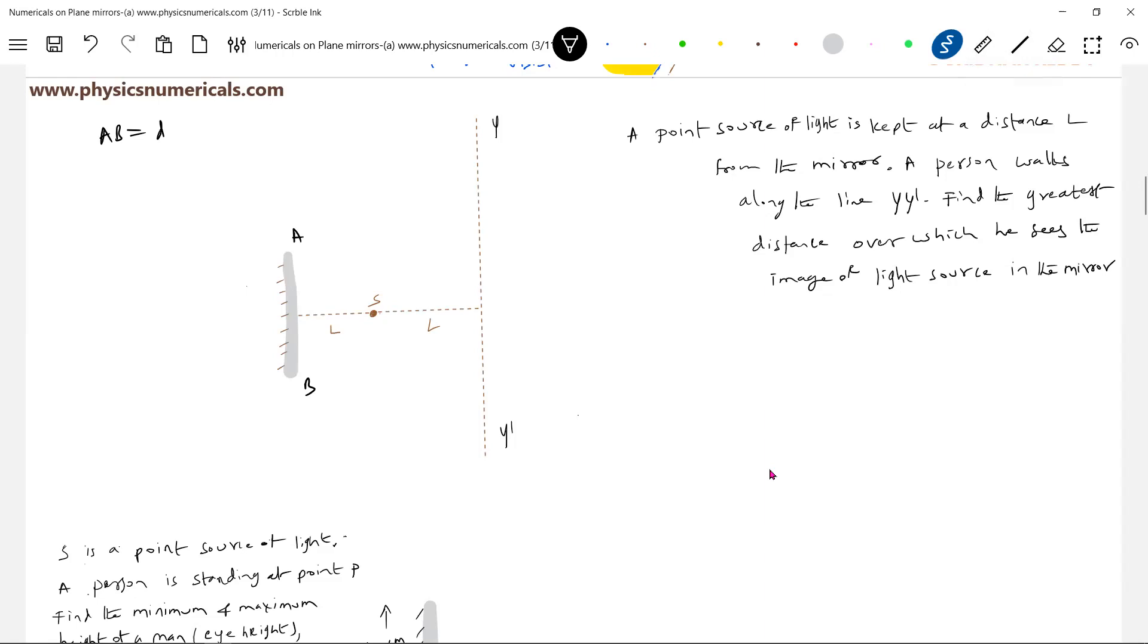Let me draw the reflected rays. A ray incident at the edge A of the mirror after reflection. Similarly, a ray will be incident at the edge B of the mirror after reflection. So we can extend this line. Don't think that the lines will stop there only. It will continue to move further. So where the person is walking along the line YY'. He's asking now for what distance?